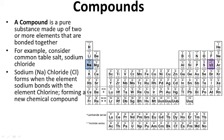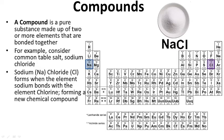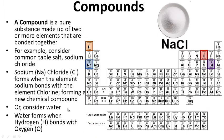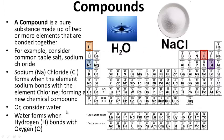Sodium (Na) and chlorine form when the element sodium bonds with the element chlorine, forming a new chemical compound — sodium chloride. That is a compound. What about water, H2O? Hydrogen bonds with oxygen to make H2O. Those are both compounds.